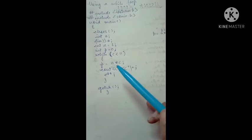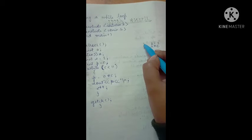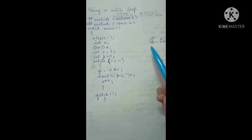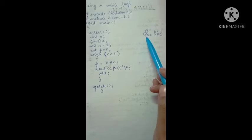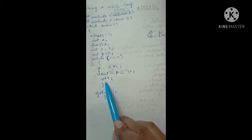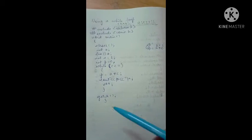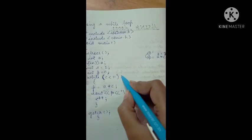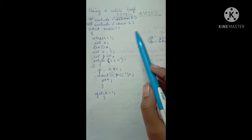When c equals 1, the computer checks: is 1 less than 11? Yes, the condition is true. So it executes: 2 * 1 = 2, which is stored in p, and 2 is printed on the output screen. Then c becomes 2. Again the condition is checked: 2 < 11 is true, so 2 * 2 = 4, and 4 is printed.